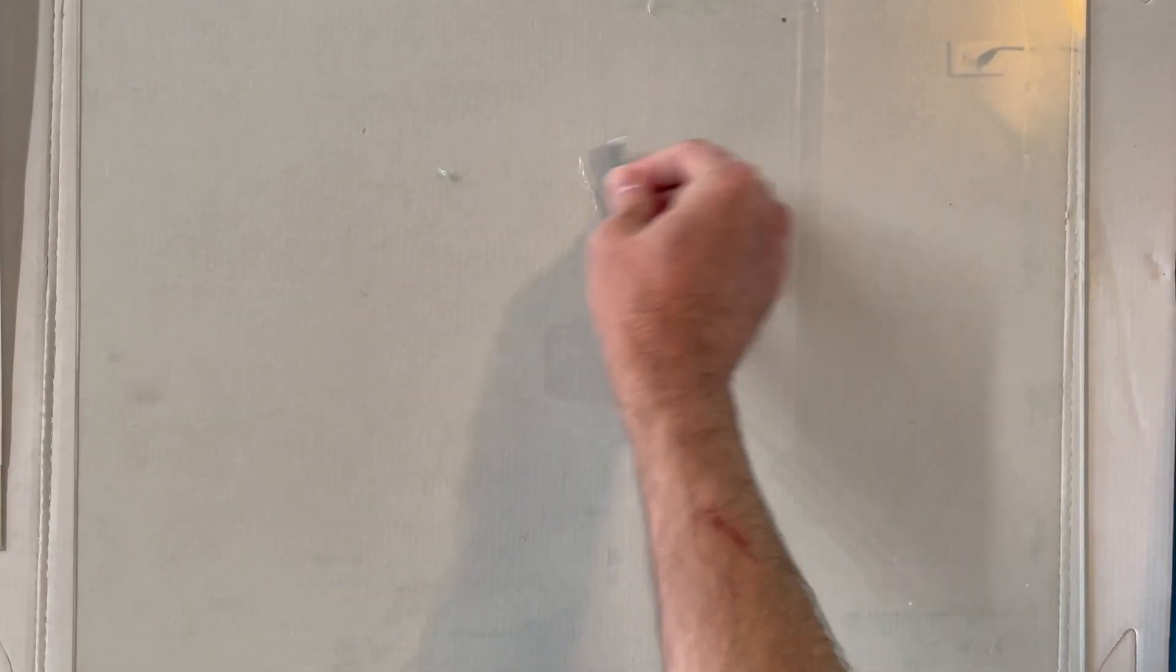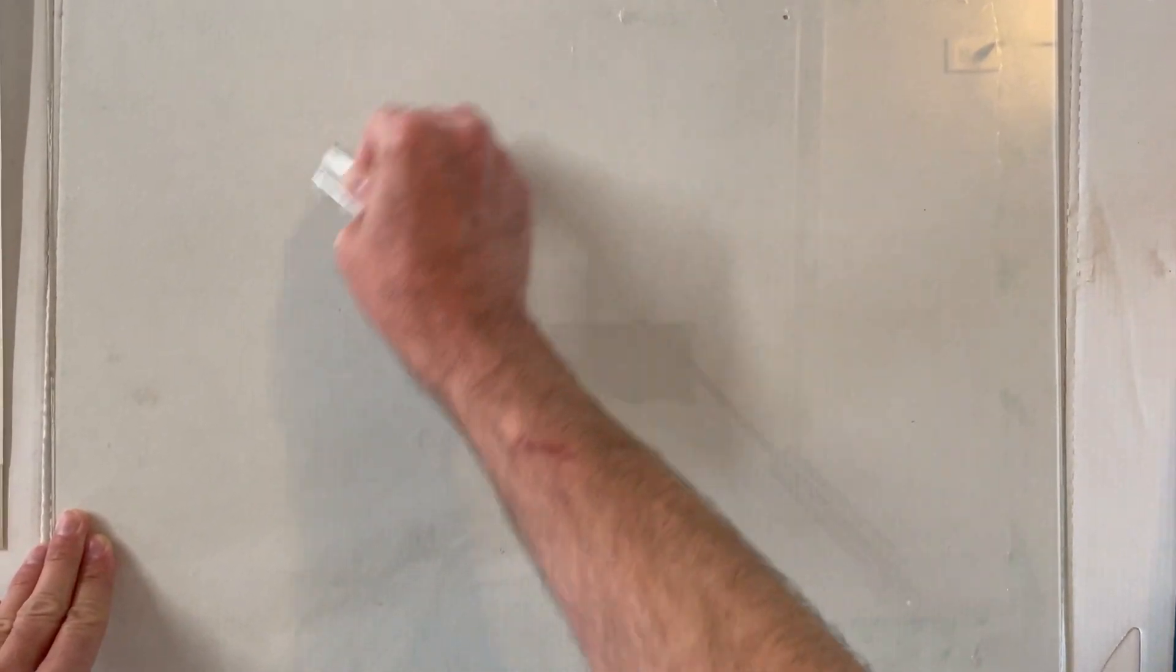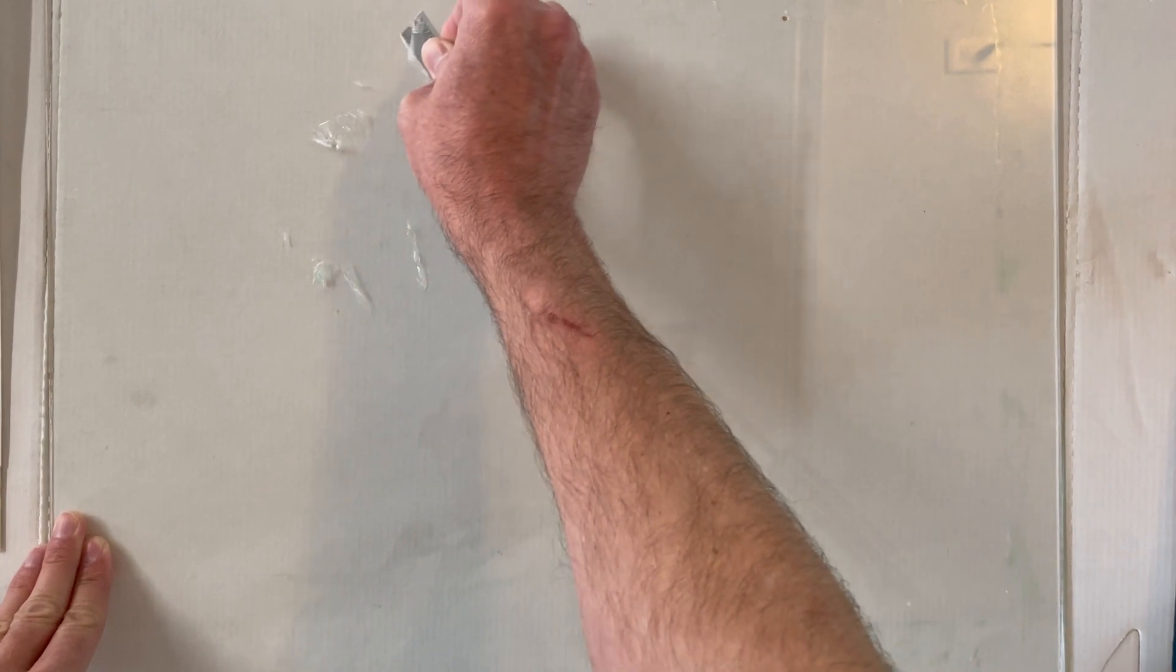I use the razor blade to clean the excess dried methyl cellulose off of my sheet of glass so that it's clean and ready for the next use.